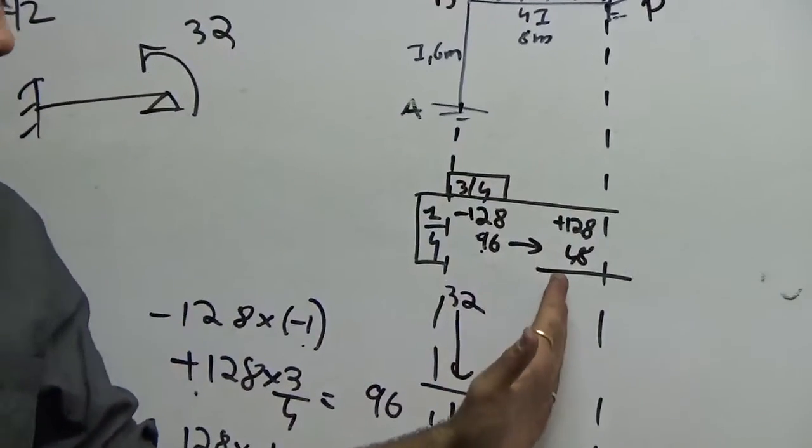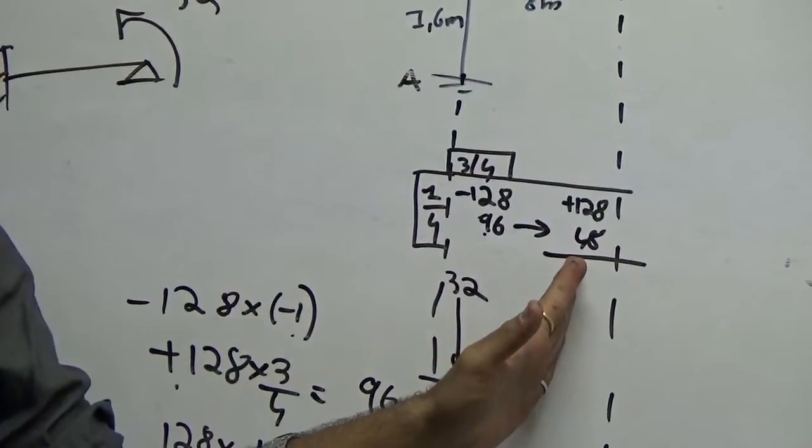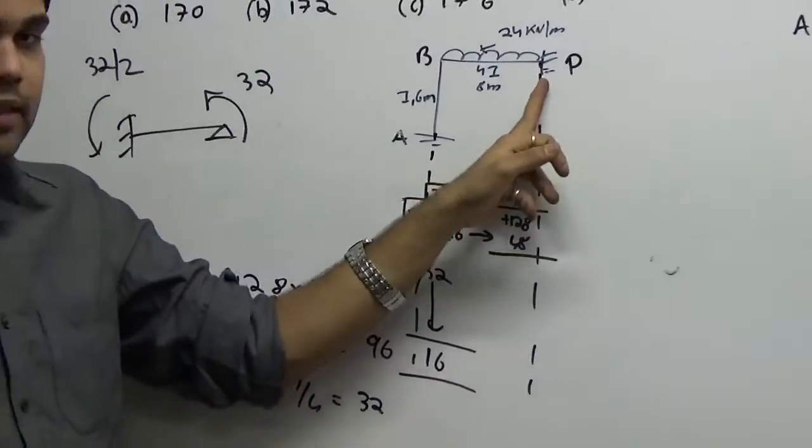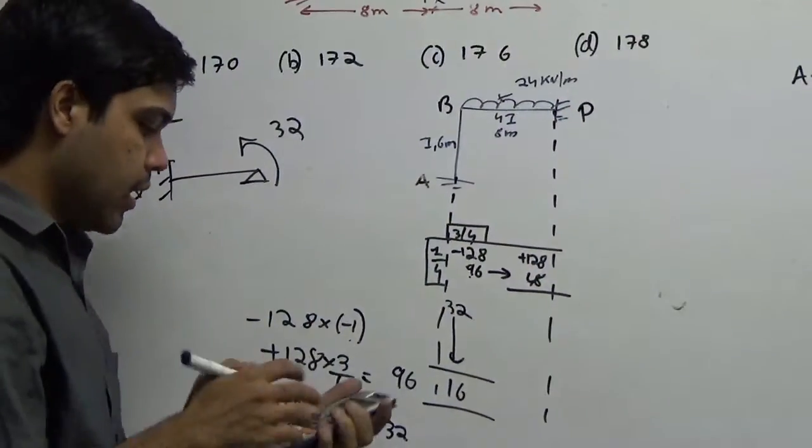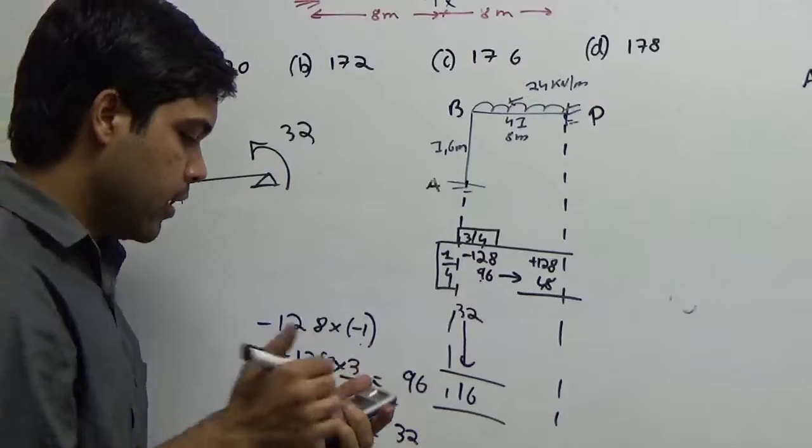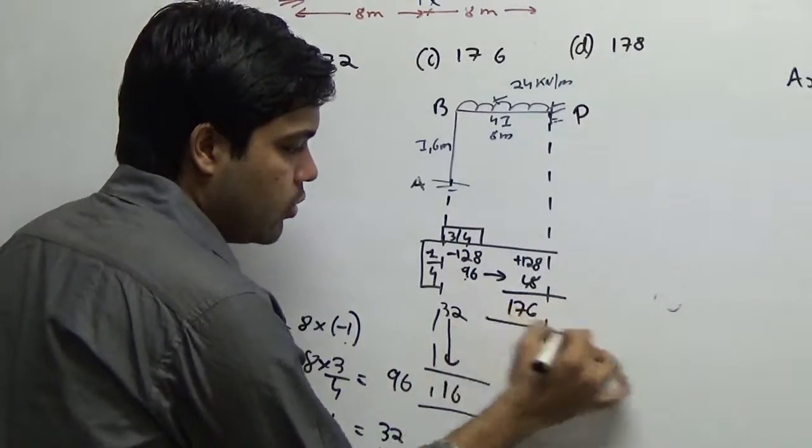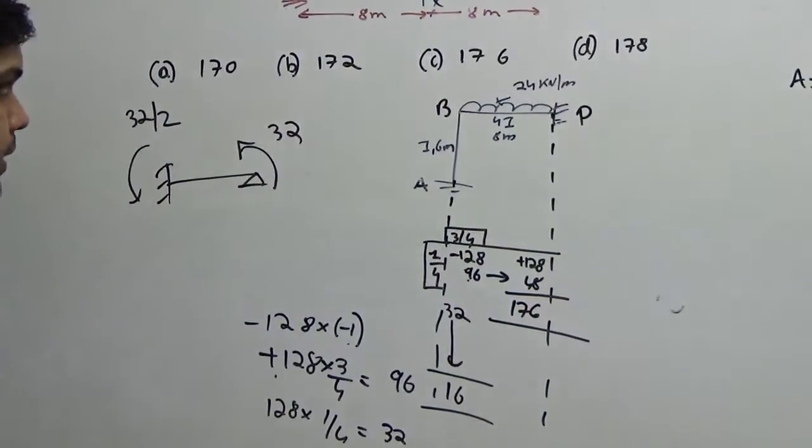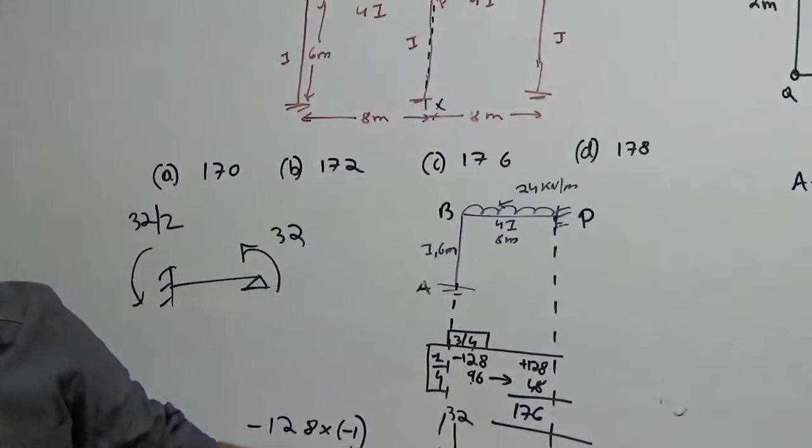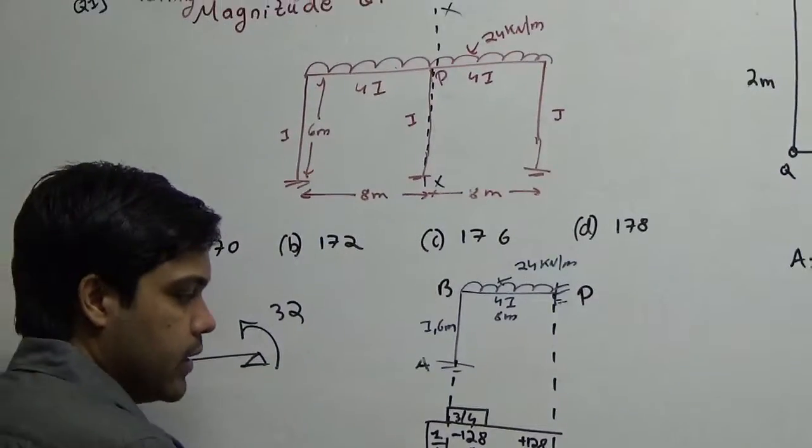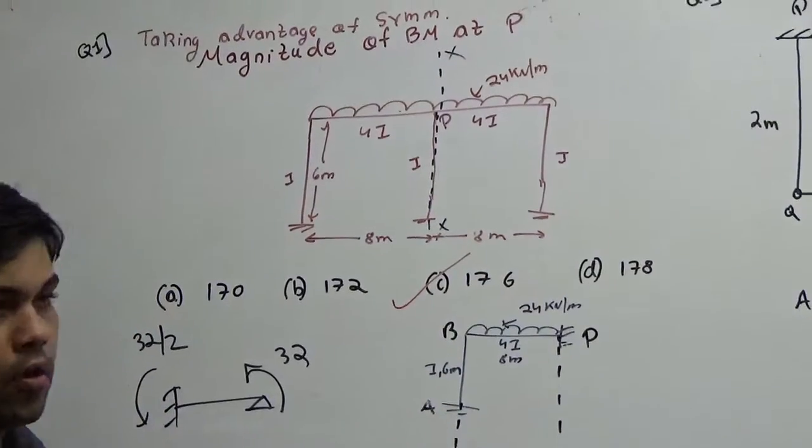Now if I want to further solve it, there is no more distribution in this case because this end is a fixed end. So what is the sum of 128 and 48? It's 176. Is it not the question it is asking for? It is asking you the moment at P which is nothing but 176. So your answer is 176, option number C.